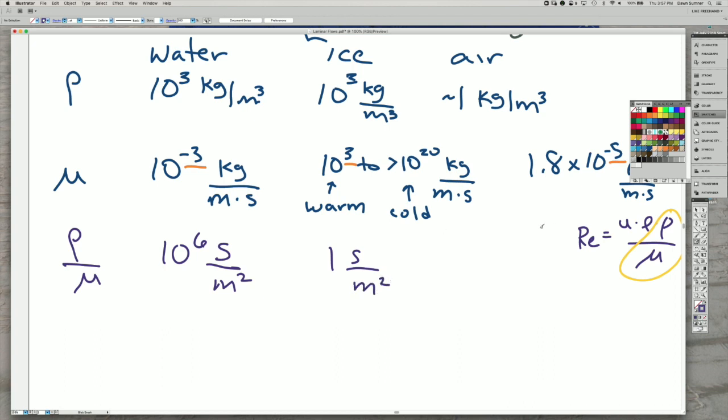And then if we take air and divide those two, we get, let's see, I have to divide 1 over 1.8. And I actually calculated that with the others. But it's about 6.8 times 10 to the fifth seconds per meter squared.